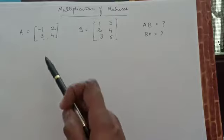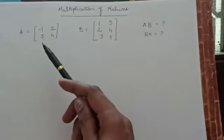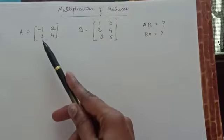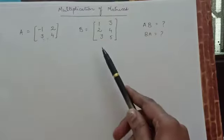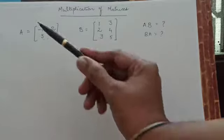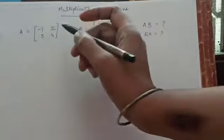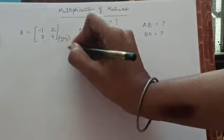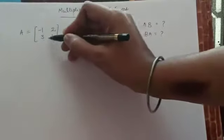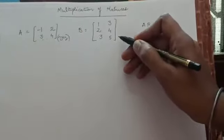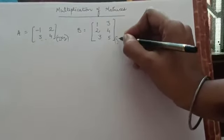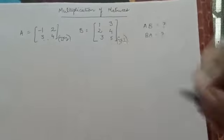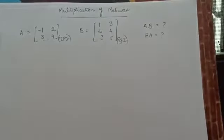Suppose in this example we have matrix A at the first place and matrix B at the second place. Matrix A has a size of 2 by 2 — 2 rows and 2 columns. Matrix B has a size of 3 by 2 — 3 rows and 2 columns.